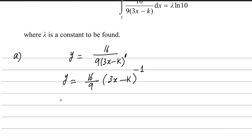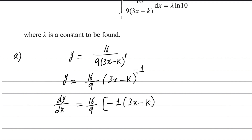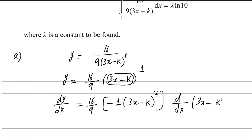Now, differentiate y with respect to x. We will apply the constant number and apply the power rule. According to the power rule, this power will multiply the function. Minus 1 will multiply 3x minus k, and we reduce the power by 1, so minus 1 minus 1 will be minus 2. Here is a very important point: whenever the expression under the power is other than just x, we differentiate that inner function again. This is very important — you must memorize it. The function under the power is always differentiated and multiplied.